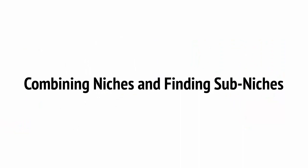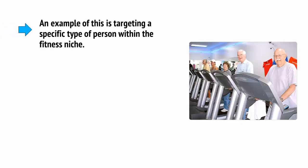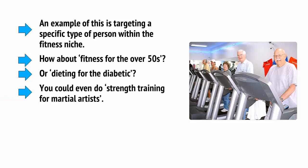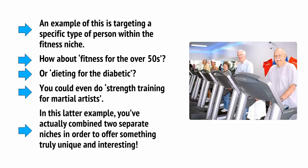In order to tick all these boxes, one strategy you can use is to target a sub-niche — a niche within a niche. An example of this is targeting a specific type of person within the fitness niche: fitness for the over 50s, or dieting for the diabetic. You could even do strength training for martial artists. In this latter example, you've actually combined two separate niches in order to offer something truly unique and interesting.